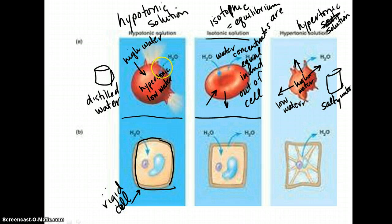The same thing happens to a plant cell, meaning when you put it into a hypotonic solution, you have low water here, high water here, just as with the red blood cell.